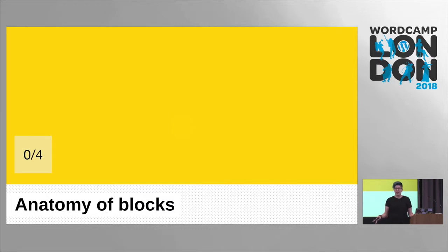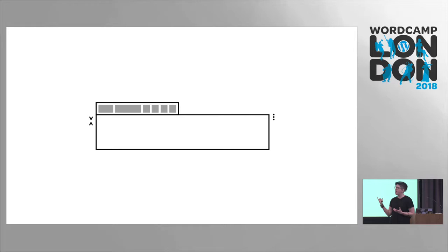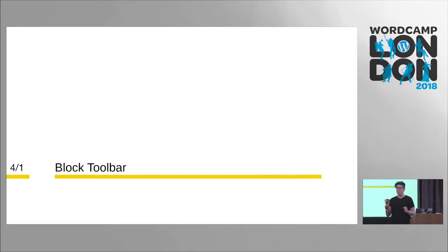That was a fast jaunt through some of the wider design language and vision of Gutenberg. Now I'm going to hone in to what a block is made of. Here is a blueprint of a block — it has a toolbar, it has the ellipsis, and has arrows to move it up and down. Let's look at the block toolbar — here you can see the paragraph block with the toolbar beside it.